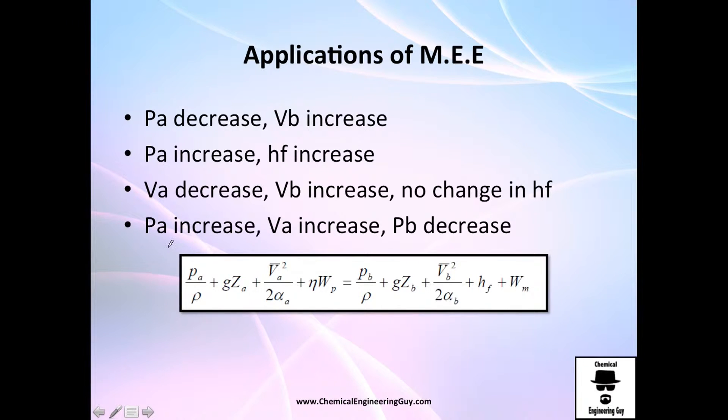Now you can have examples in which pressure of a drops and because of this drop, velocity of b increases. You could also have an increase of pressure on a and you will increase the friction due to this. You have more pressure, therefore you will have more increase on this. And you could have a lot of examples: decrease of Va, Vb increase with no change in hf, decrease on pressure, decrease in velocity and so on. But once again guys, I prefer you to do the examples rather than just thinking on cases. This is going a little bit too abstract.